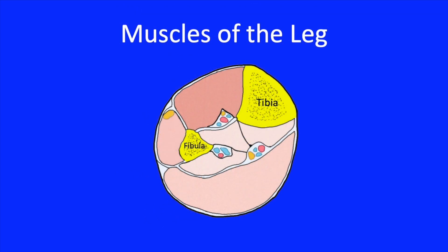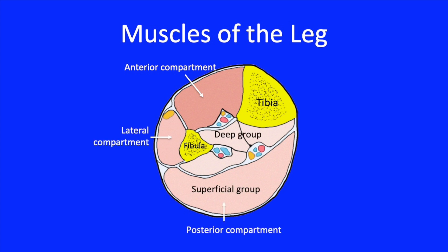The muscles of the leg, as those of the thigh, are all arranged into compartments. The first is the anterior compartment, next the lateral compartment, and finally the posterior compartment. In the posterior compartment, the muscles are grouped into a superficial and a deep group.